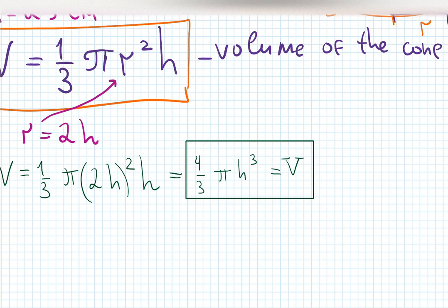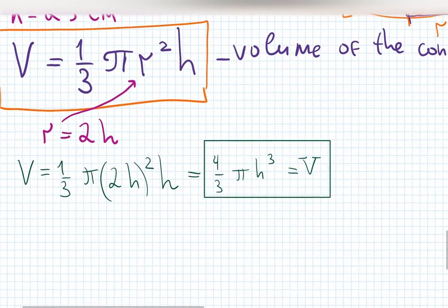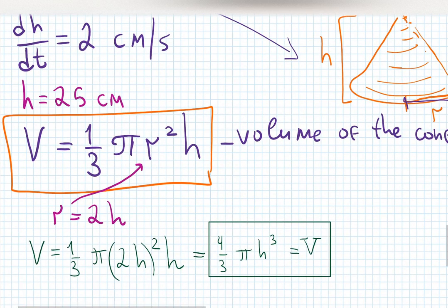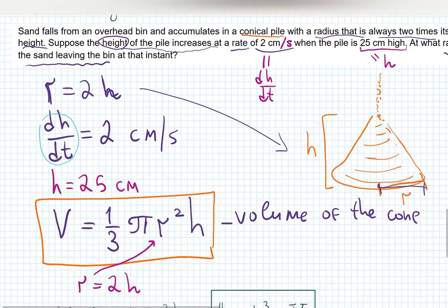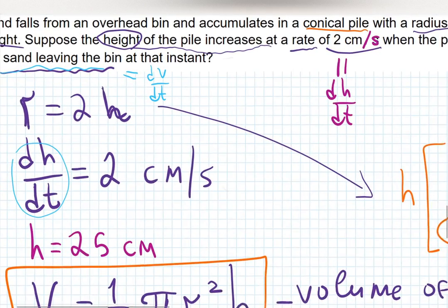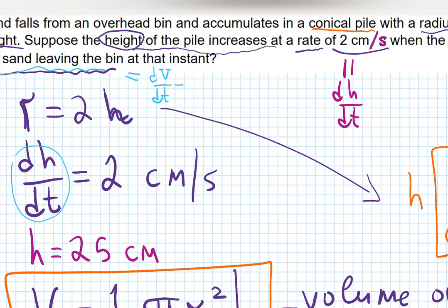When I differentiate this, two rates will pop out: V changes with respect to time giving dV/dt, and h changes with respect to time giving dh/dt. dh/dt is given; the volume is what they're asking about. At the moment when the height is 25, they're asking for dV/dt — question mark.